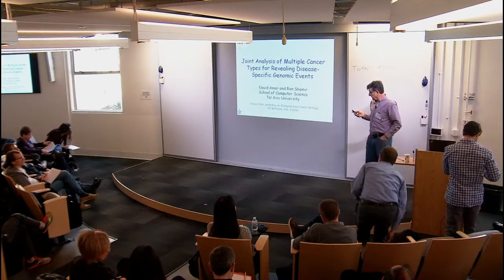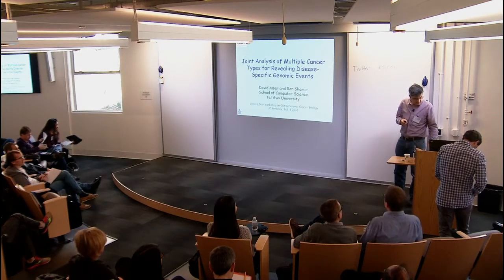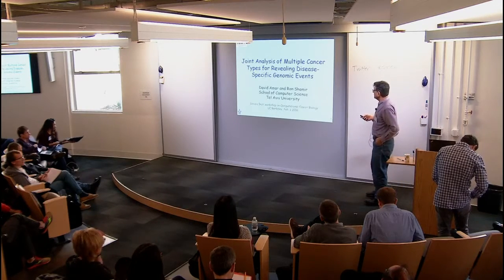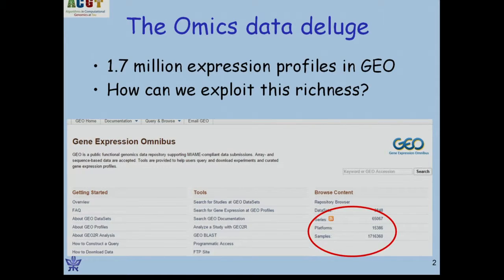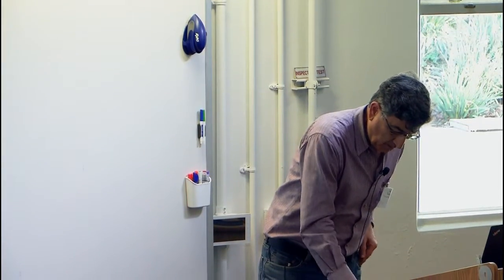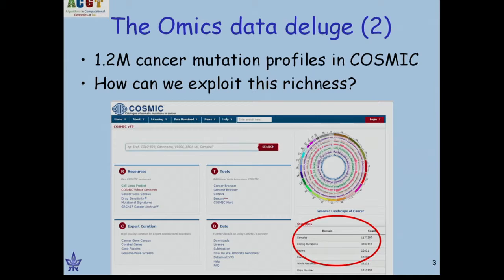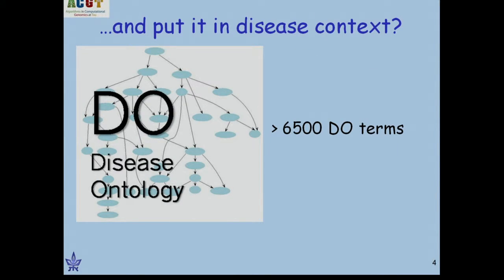This talk is given by Didi Amar and myself. As motivation, we've been working a lot on gene expression, and by now there are almost two million expression profiles in GEO. How can we make use of this richness? Similarly, in the COSMIC database, there are over a million cancer mutation profiles. One way to put this in disease context is to use the disease ontology, which contains over 6,000 disease terms.